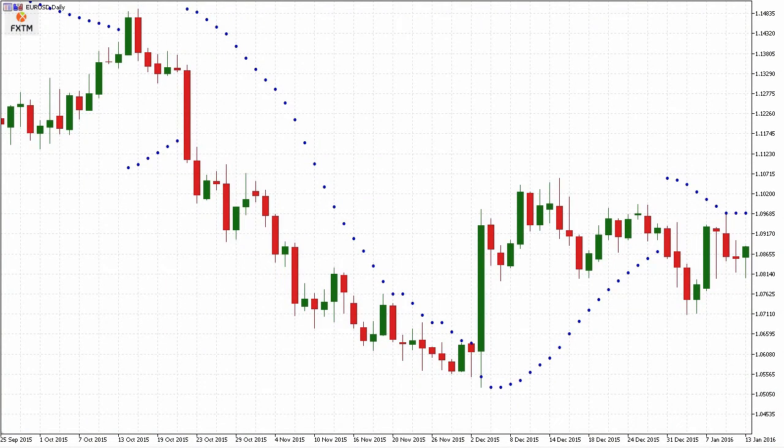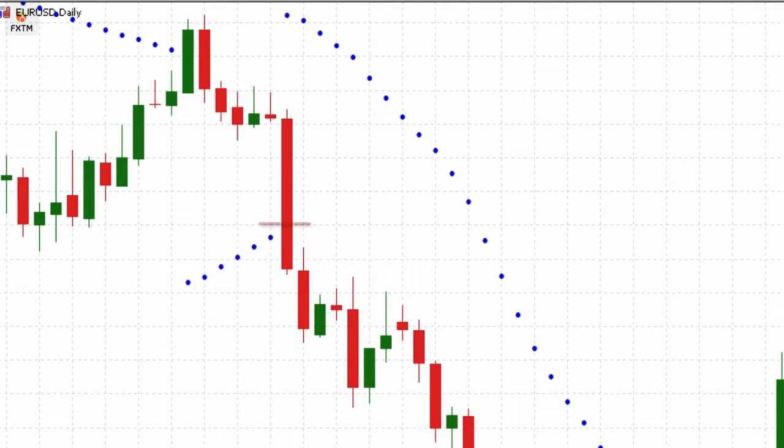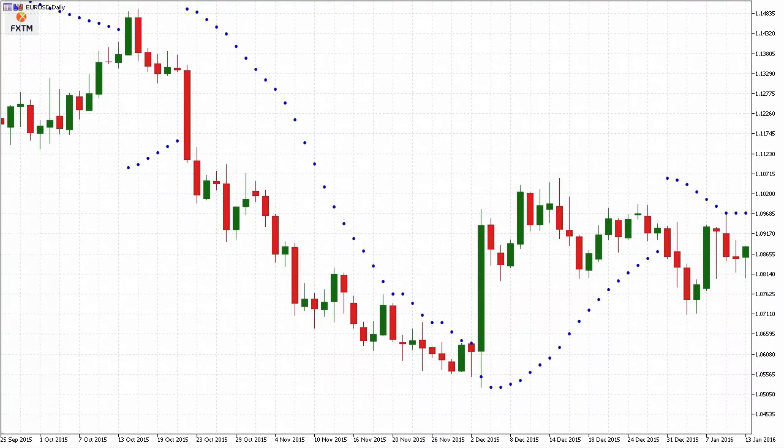Here you can see an example where initially the price trend was bullish, but then those dots were taken out as the low exceeded where the parabolic SAR dot was. When the dot was replaced above the bar, you can see it was placed at a point equal to the prior high before the price began to decline. Shorts might have considered opening a position here, and if we assume there was a trailing stop placed at the dot's position, we might have expected the position to be stopped out and even potentially reversed at this point.